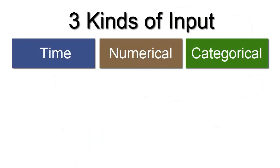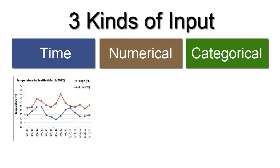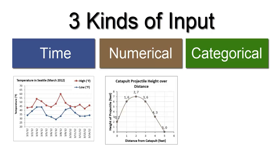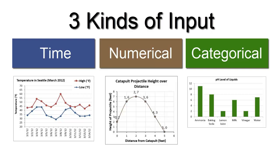If your input is time, a line graph is a great choice. If your input is numerical, check out an XY scatter plot. If your input is different categories, try using a bar graph, a column chart, or a pictograph.